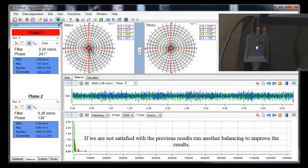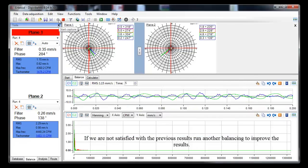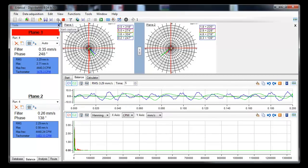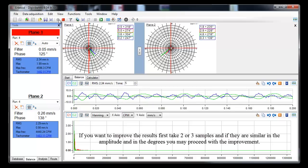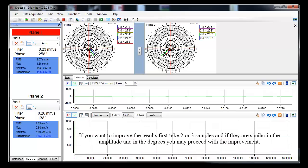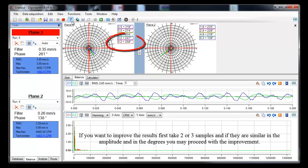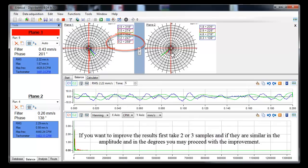If we are not satisfied with the previous results, run another balancing to improve the results. If you want to improve the results, first take two or three samples, and if they are similar in the amplitude and in the degrees, you may proceed with the improvement.